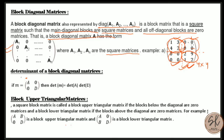The next matrix type is the block upper triangular matrix. A square block matrix is called a block upper triangular matrix if the blocks below the diagonal are zero, and a block lower triangular matrix if the blocks above the diagonal are zero. For example, in the block upper triangular matrix, A, B, and D are non-zero square matrices and the off-diagonal block is the null matrix.